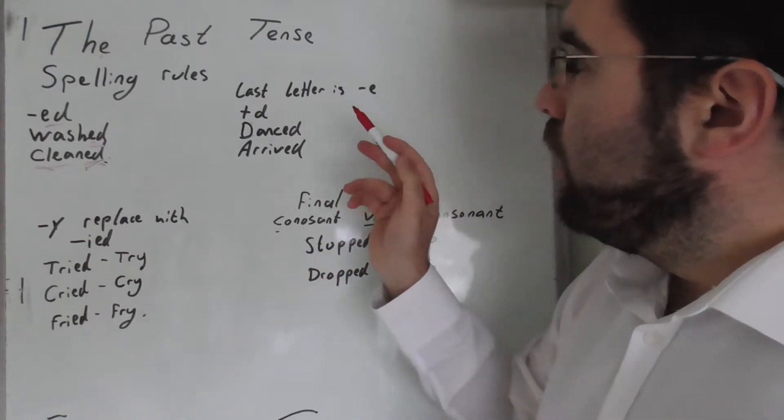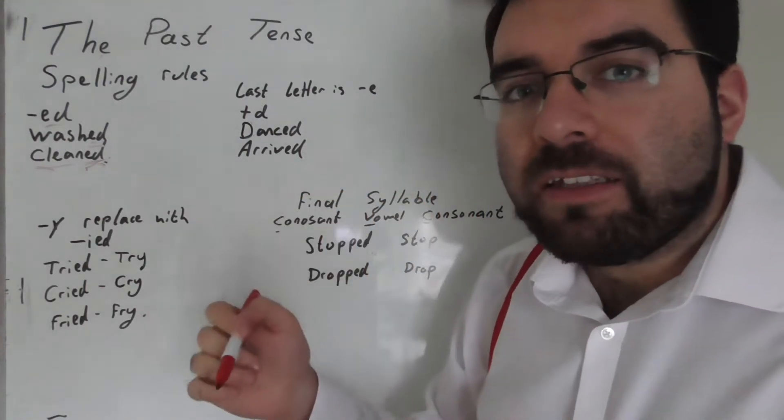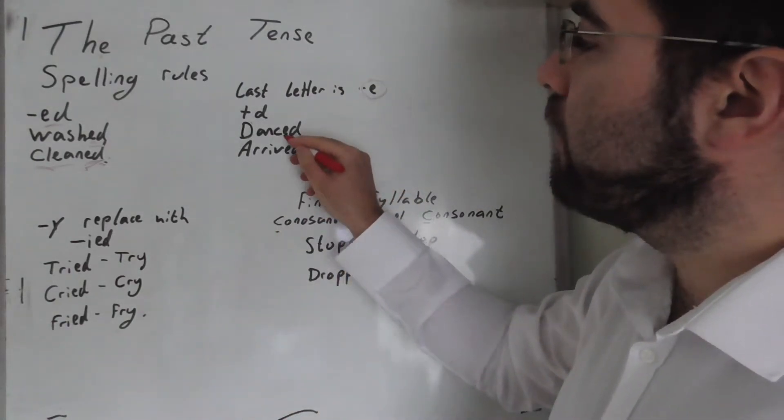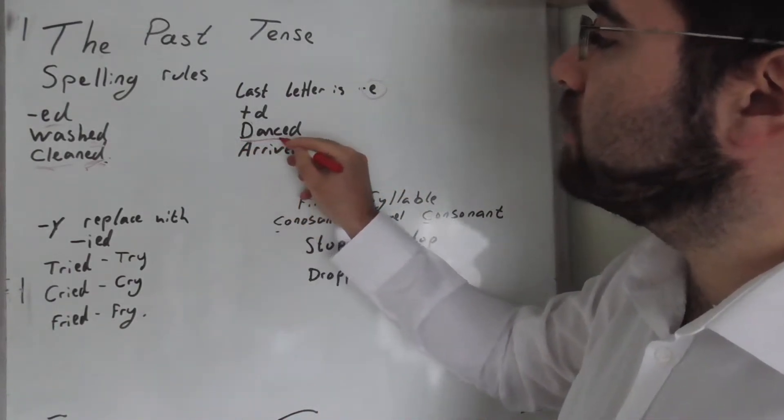However, if the last letter already ends in e, then we just add d. Dance - we add d.